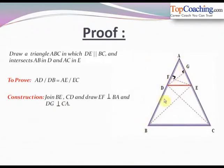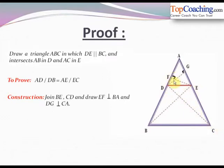This is triangle ABC. DE is a line parallel to side BC that intersects AB at point D and AC at point E. We have to prove that AD/DB = AE/EC. The construction involves joining BE and CD, drawing EF perpendicular to side BA, and drawing DG perpendicular to side AC. This is the construction used to prove the Thales theorem.